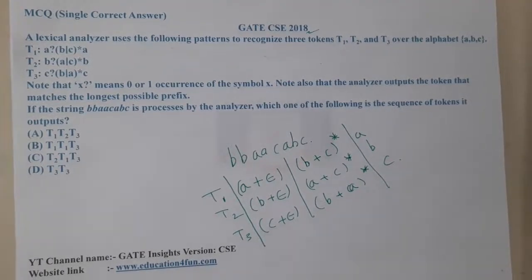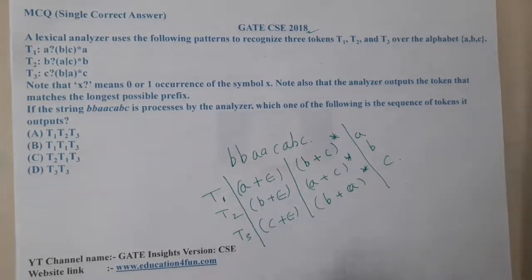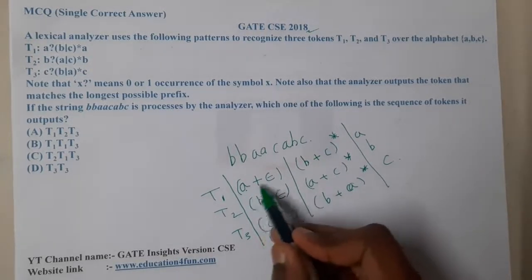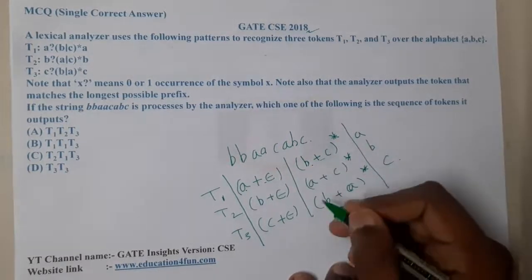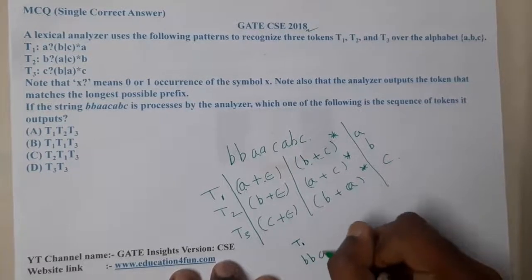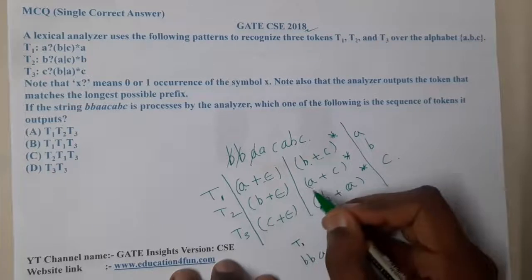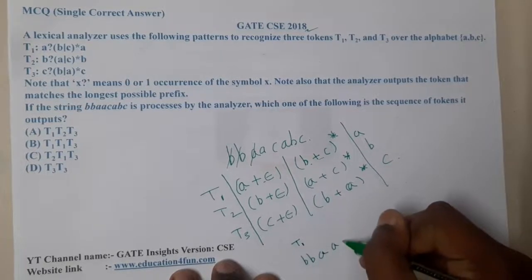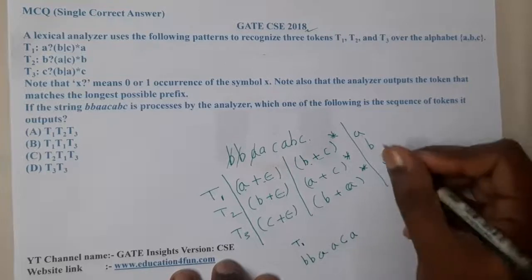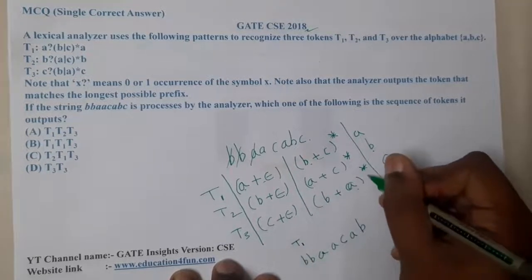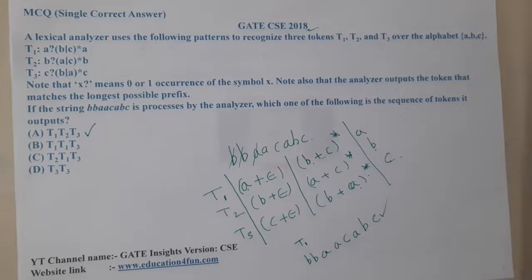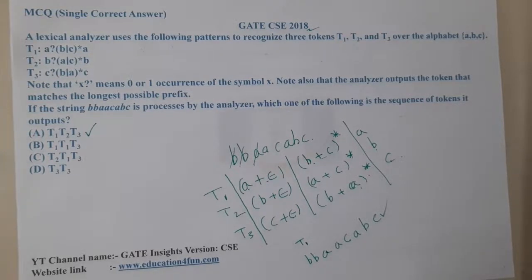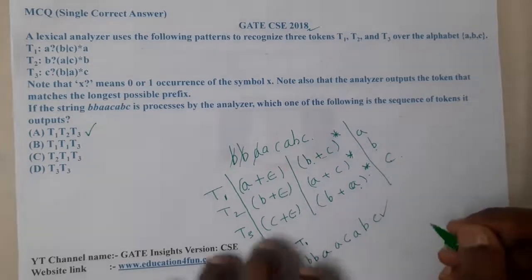Let us try option A, using tokens in the order T1, T2, T3. From T1 I will take two b's and a single 'a'. Then executing T2, I take 'a', then 'c', then 'a', then 'b'. After that using T3 I take epsilon, epsilon, and then 'c'. So using option A, the pattern seems possible.